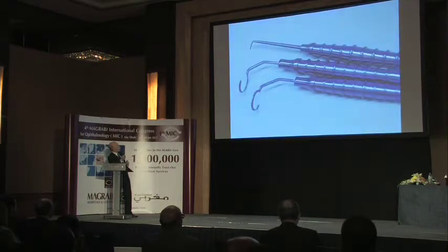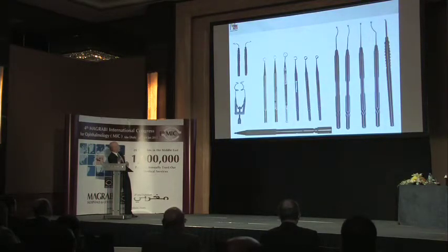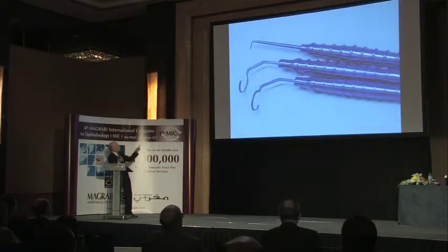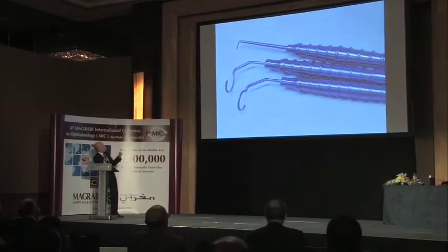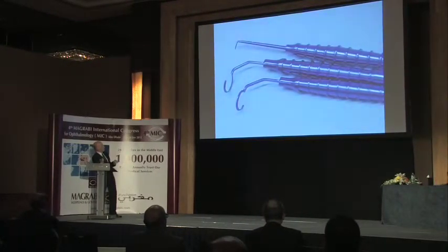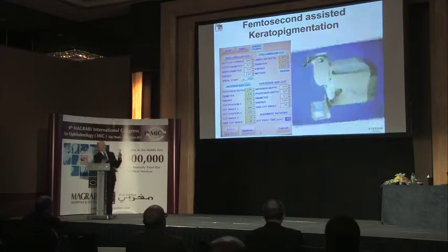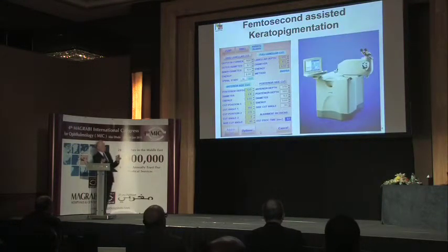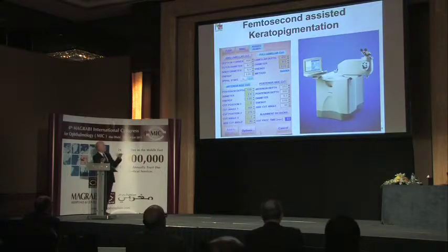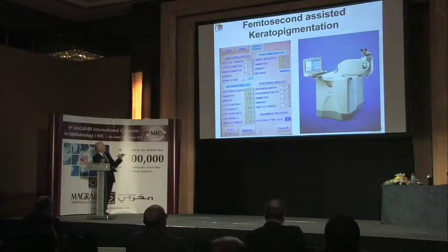These are the instruments we developed, manufactured in the United States by Epsilon, used for different steps of the manual technique. They are important for achieving the limbal corneal tunnel where we introduce the pigments. When the cornea has no superficial opacities and is suitable, we use the IntraLase femtosecond laser — we found this device the best for creating tunnels and spaces for the pigments. Other lasers have not performed as well for this purpose.